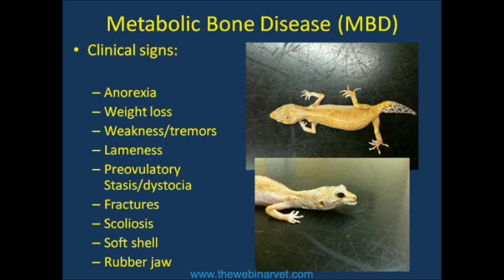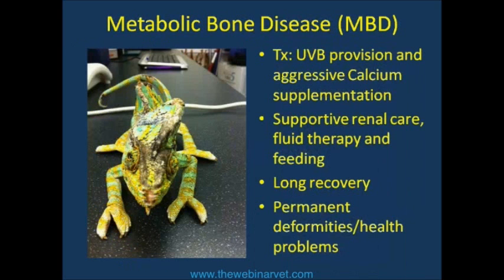Fractures are common, including pathological fractures or trauma that would normally be manageable causing a break. Scoliosis of the spine and tail can suggest chronic historical metabolic bone disease. In chelonians, you often see a soft shell to varying degrees. In lizards, we see a sign called rubber jaw — softening of the mandible — where the jaw will actually bend under pressure. You can see this gecko's mouth hanging open slightly, which is abnormal and a classic sign. This veiled chameleon shows scoliosis in his spine, his crest is skewed to one side, he has very weak grip, and he's shuffling along on his belly.